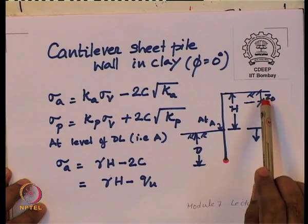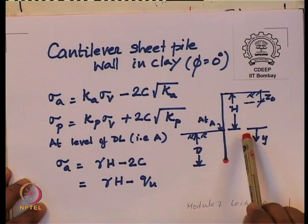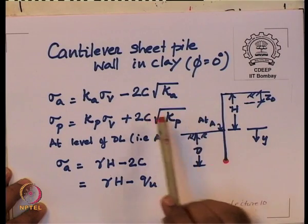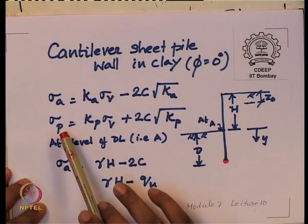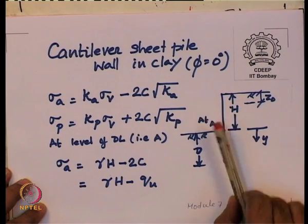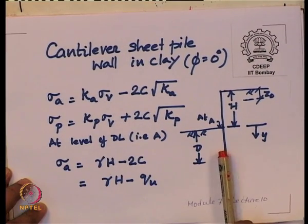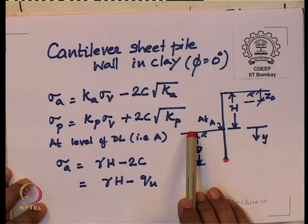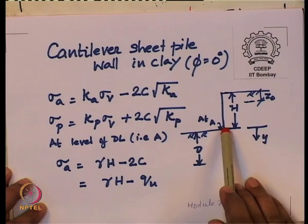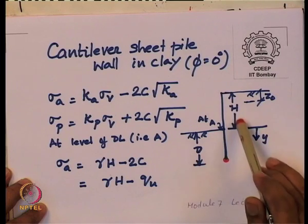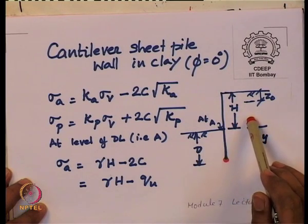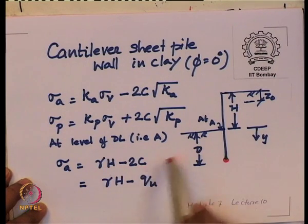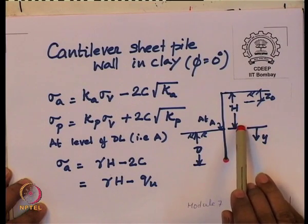The wall rotates about the toe, with z_0 being the depth of tension cracks. Active earth pressure: sigma_a equals k_a sigma_v minus 2c root(k_a). Since phi equals 0, k_a equals 1 and k_p equals 1. Passive earth pressure: sigma_p equals k_p sigma_v plus 2c root(k_p). At point A (dredge level), the active pressure ordinate is gamma h minus 2c, which can be written as gamma h minus q_u since q_u equals 2c.